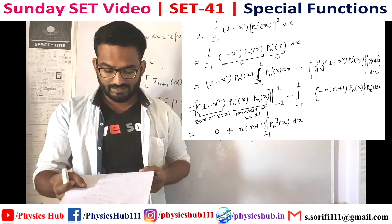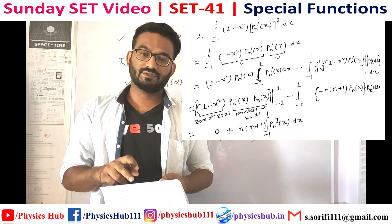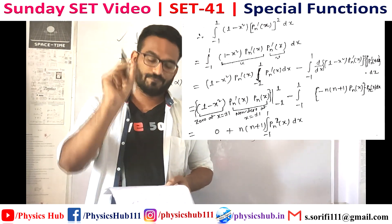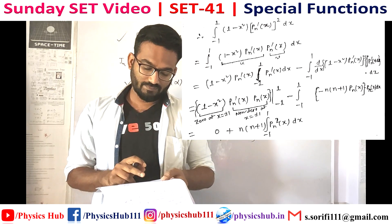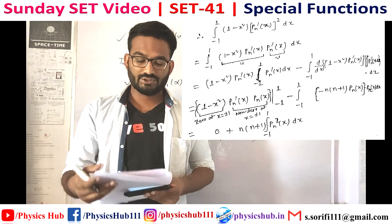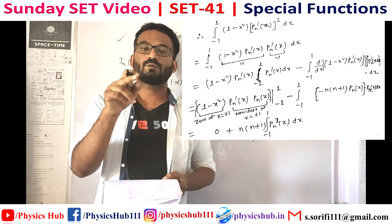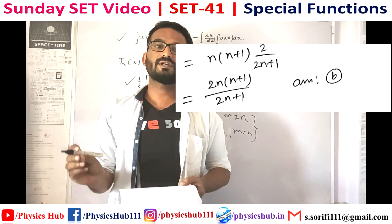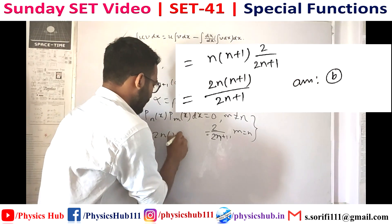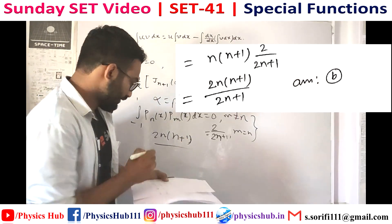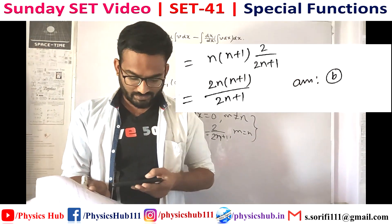Replacing the derivative term using equation 4, the integral simplifies to n(n+1) times the integral from −1 to 1 of [Pn(x)]² dx. From the orthogonality relation, the integral of [Pn(x)]² from −1 to 1 equals 2/(2n+1). Substituting this value gives 2n(n+1)/(2n+1), which matches option B. So option B is the correct answer.